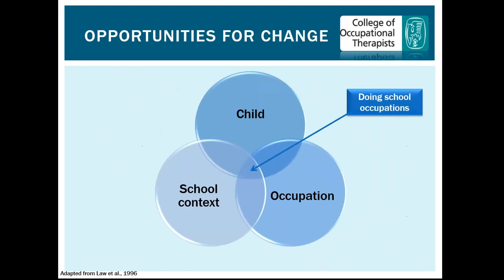When thinking about opportunities for change, an occupational therapist considers the factors influencing a child's doing of activities. We have a model where the child's ability to do occupations sits at the centre. The child has their own skills, abilities, age, gender, past experiences, likes, interests, and motivations — all of those things are considered as part of the child circle.